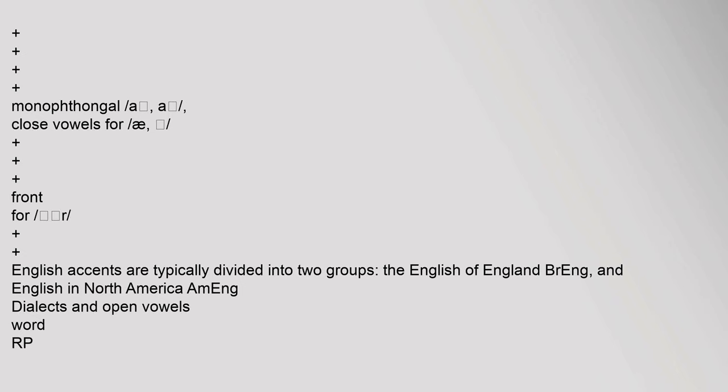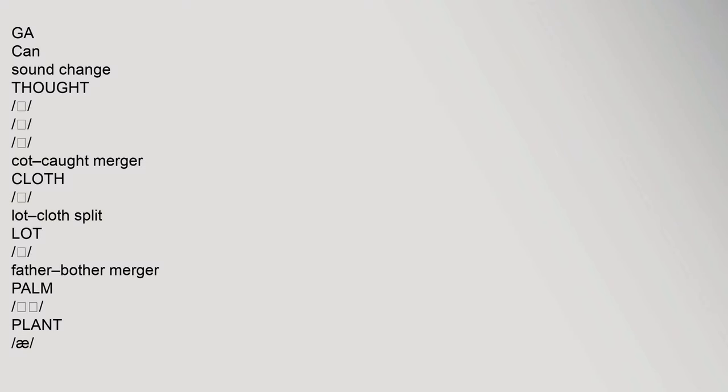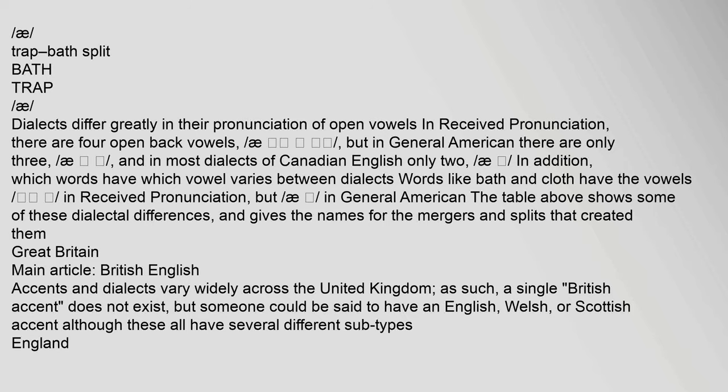Dialects differ greatly in their pronunciation of open vowels. In received pronunciation there are four open back vowels, but in General American there are only three, and in most dialects of Canadian English only two. In addition, which words have which vowel varies between dialects. Words like 'bath' and 'cloth' have different vowels in received pronunciation versus General American. The table of phonological features shows dialectal differences and gives names for the mergers and splits that created them.